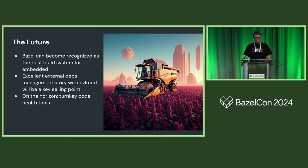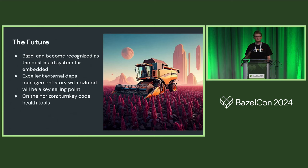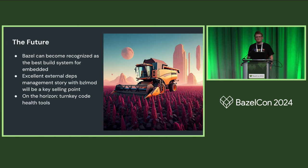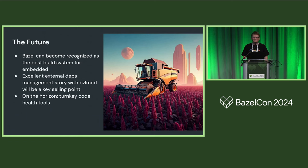Looking to the future: we firmly believe Bazel can become recognized as the best build system for embedded development. Its secret ace is external dependencies management, which is a particularly sore point for many embedded developers when ramping up on a new project. What's important to get from here to there is doing more work on turnkey code health tools — making it easier to integrate linting, formatting, and other code health workflows into a Bazel-first development approach.